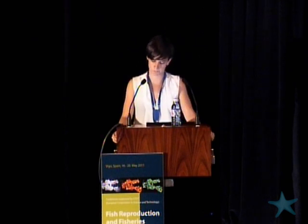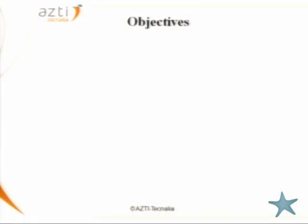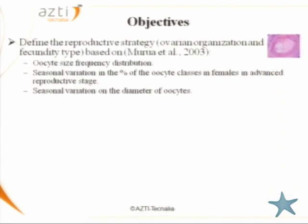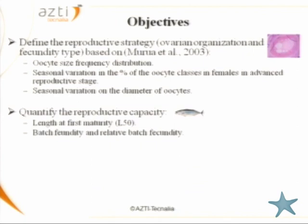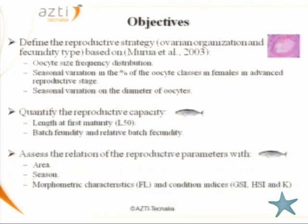The biological information available is scarce and not up to date, so we thought there is a need for this information. In order to study the reproductive biology of the skipjack, we defined three objectives: first, to define the reproductive strategy in terms of ovarian organization and fecundity type; second, at individual and population level, to estimate size at first maturity, batch fecundity, and relative batch fecundity; and finally, to examine their relationship with area, season, length, and condition indices.